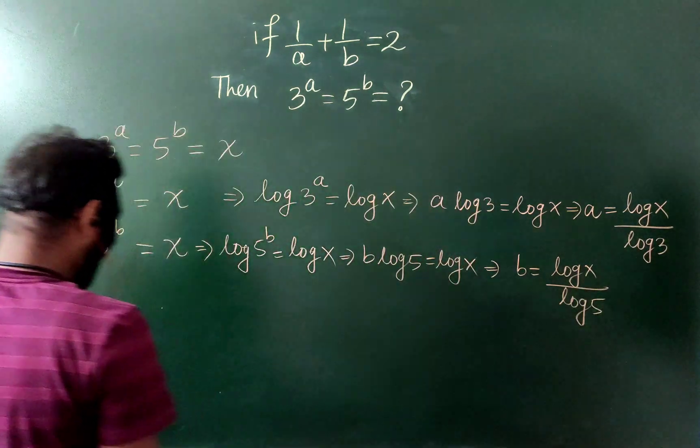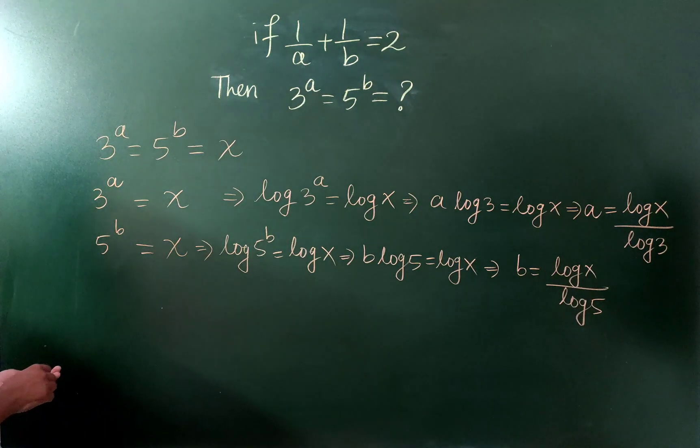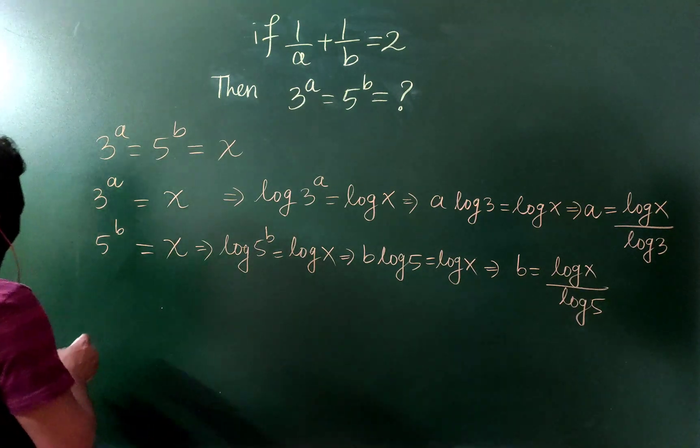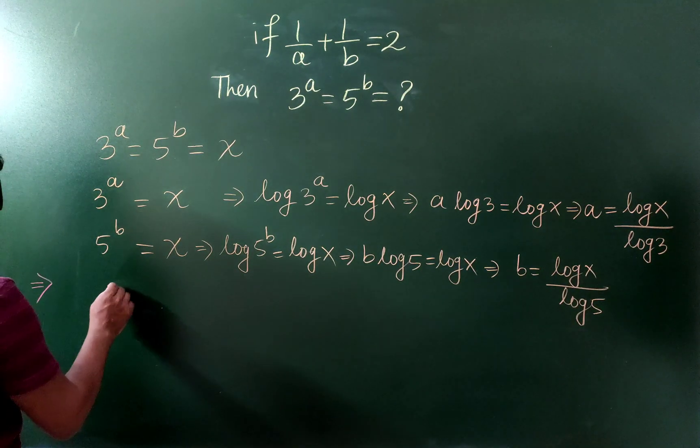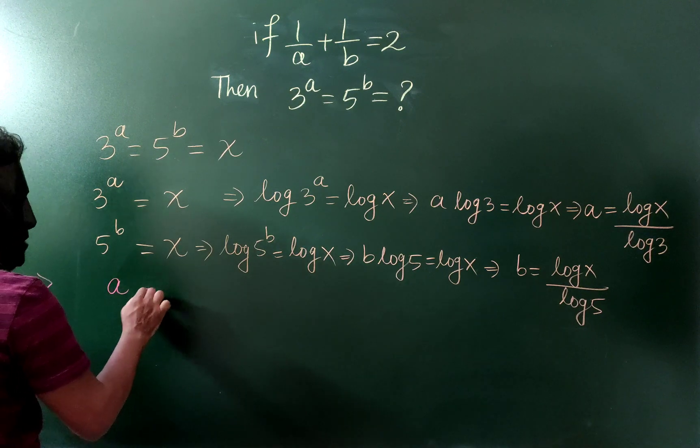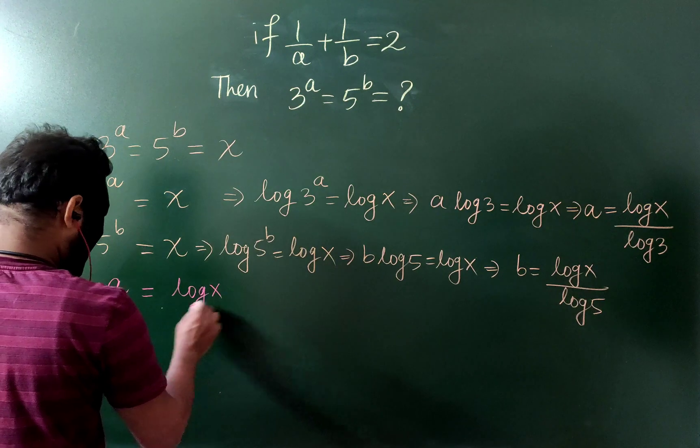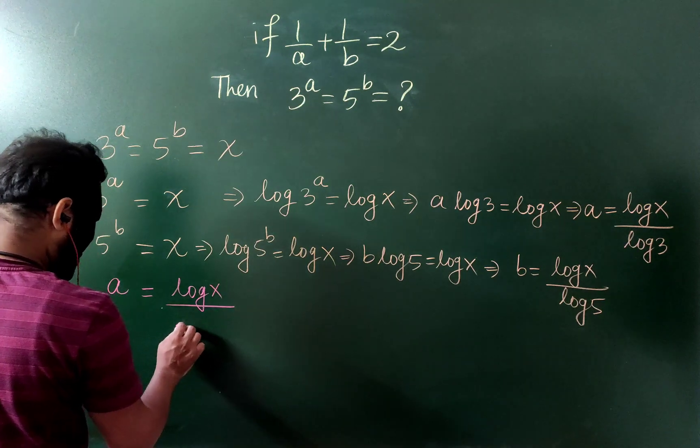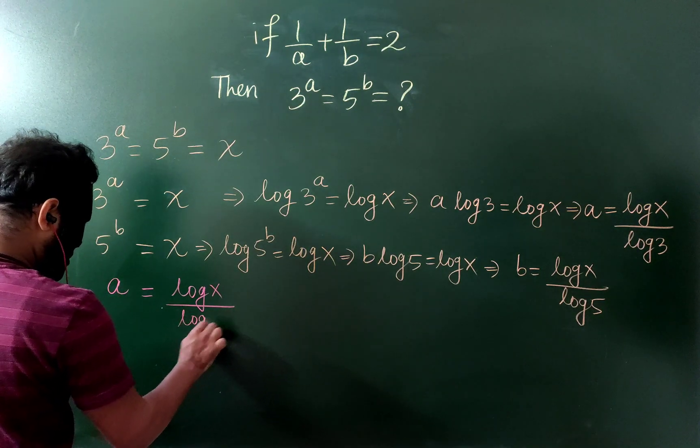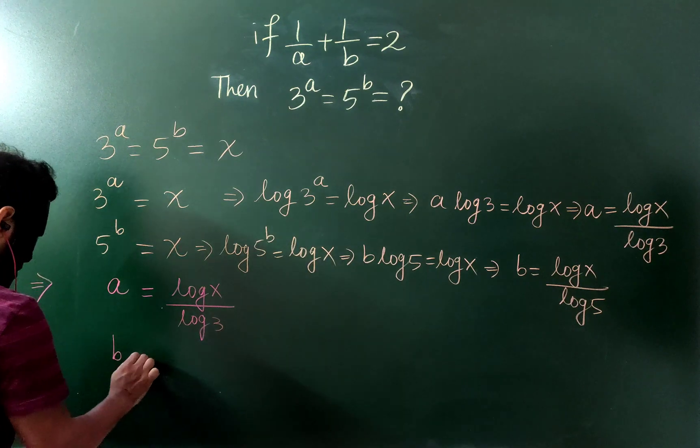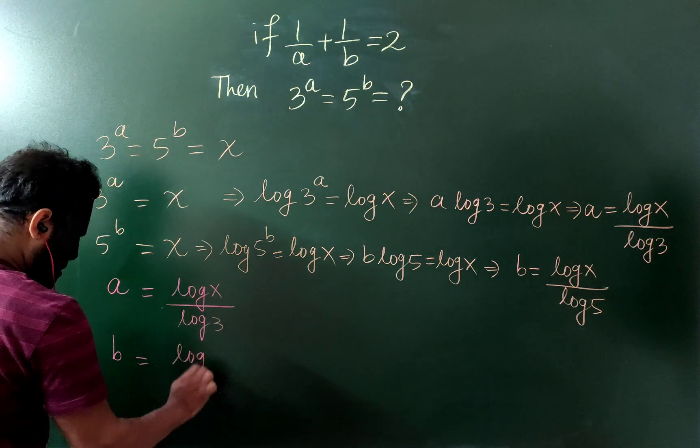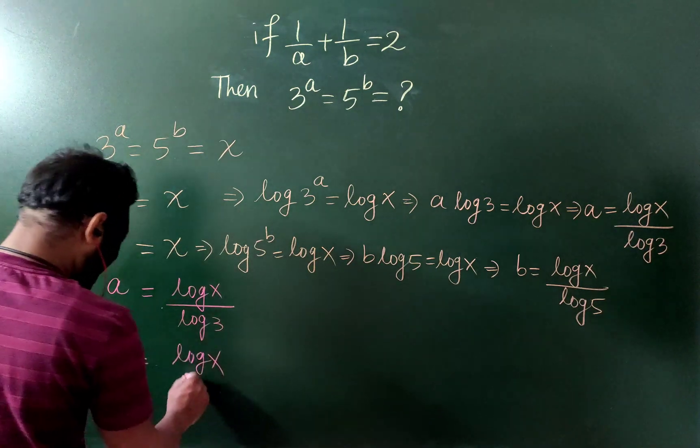And now, we have two equations: a equals to log x by log 3, and b equals to log x by log 5.